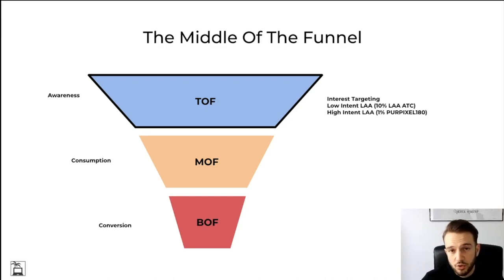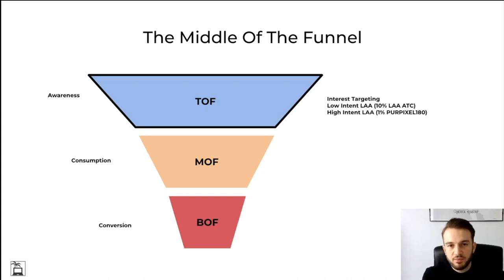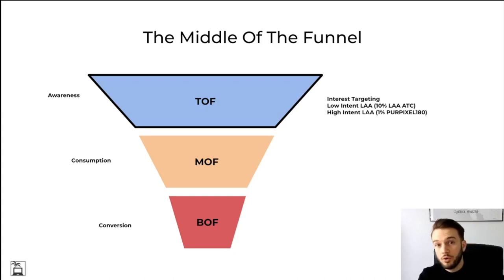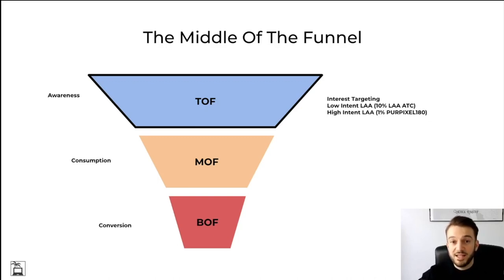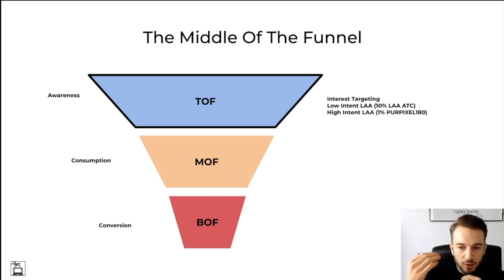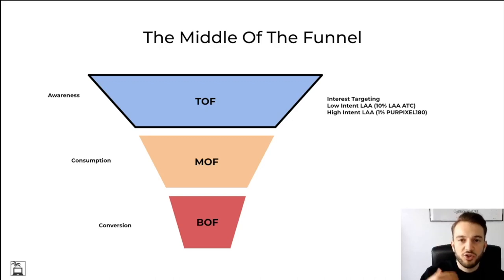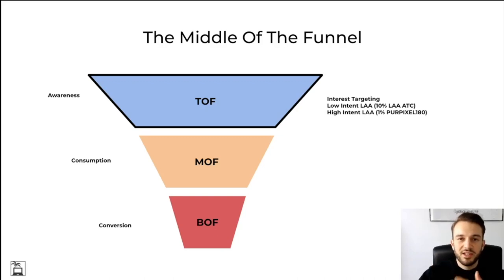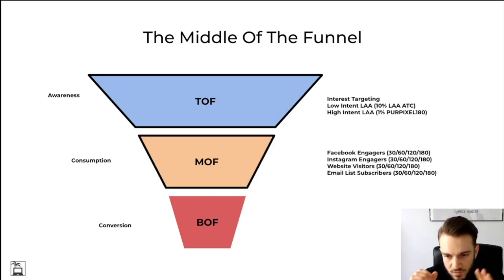A quick note on lookalike audiences: if you upload a static audience — like the purchase list from Shopify — that will always stay the same and doesn't change over time. If you use the pixel purchase list, however, it constantly changes because we take, for example, the last 180 days of purchases. 180 days from yesterday will be a different audience than 180 days in two months' time, because it constantly evolves every single day. With the Shopify list, you'll need to re-upload it once a week or once a month depending on the size of the store.